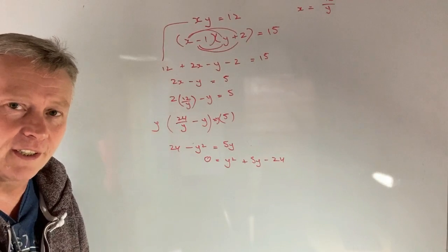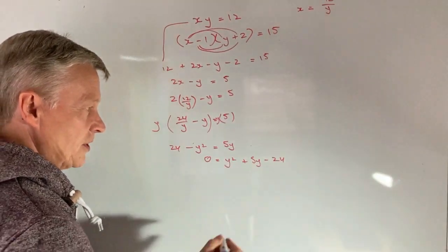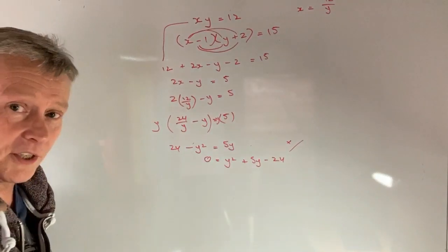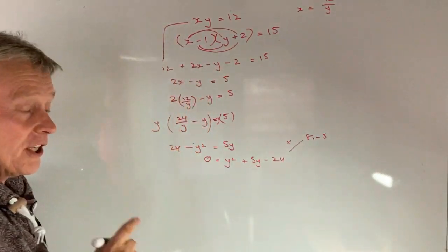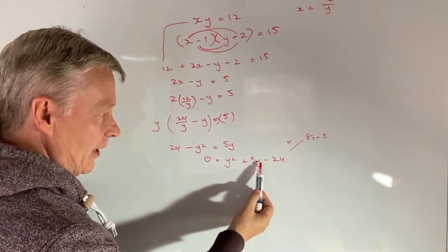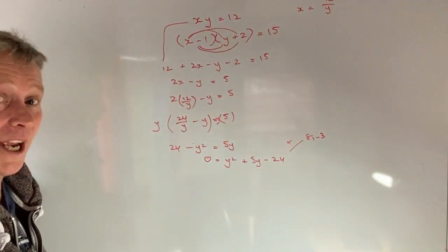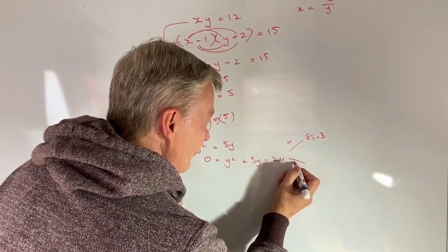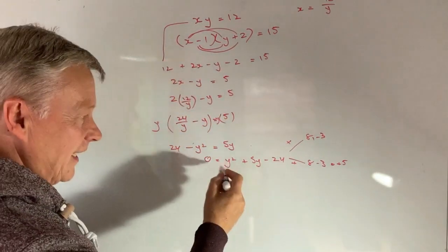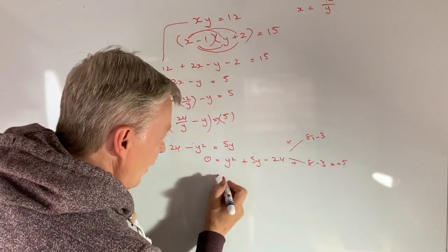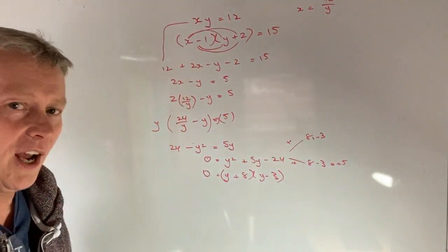Now you might recognize this as a quadratic equation you can solve, because you've got minus 24. Well, two numbers that multiply to give minus 24 are going to be 8 and minus 3. They also add together to make plus 5y. So if I add those two together, I've got 8 minus 3. That equals plus 5. So I can factorize that as y plus 8 multiplied by y minus 3. And that all equals 0.